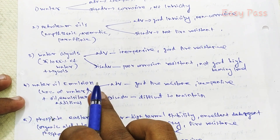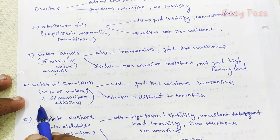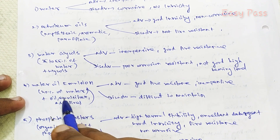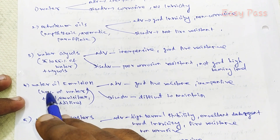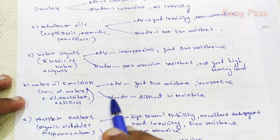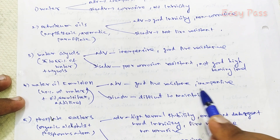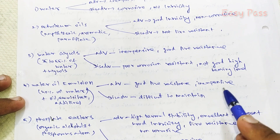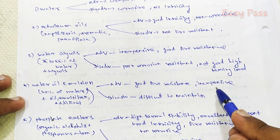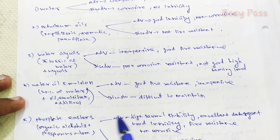Water emulsion contains about 40% of water, oil, and additives. It has good fire resistance and is inexpensive. Fire resistance is a key property. However, it has lower efficiency.